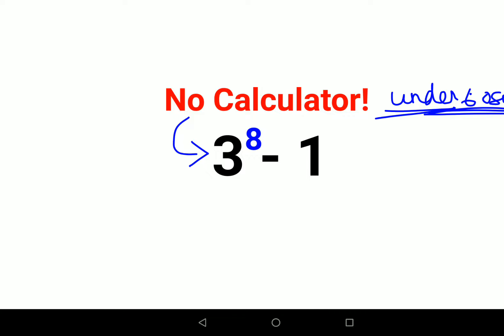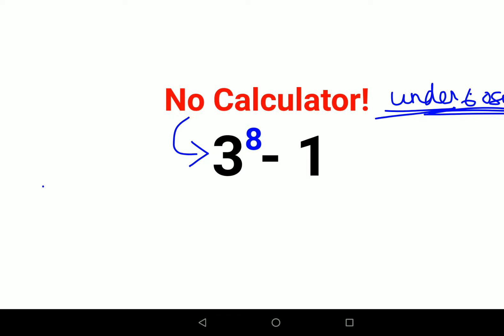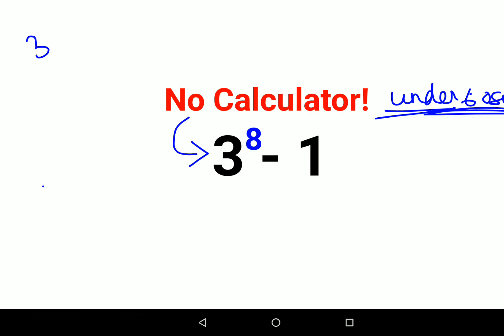So now how do we do this? See, please understand this looks like what? This can be written as 3 raised to 8. So this can be written as 3 raised to 4 into 2.